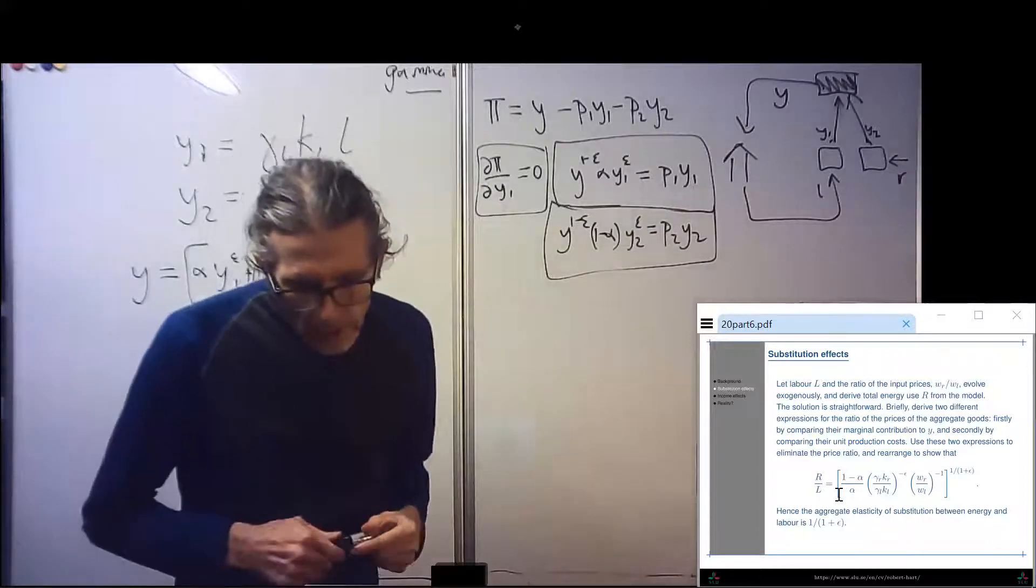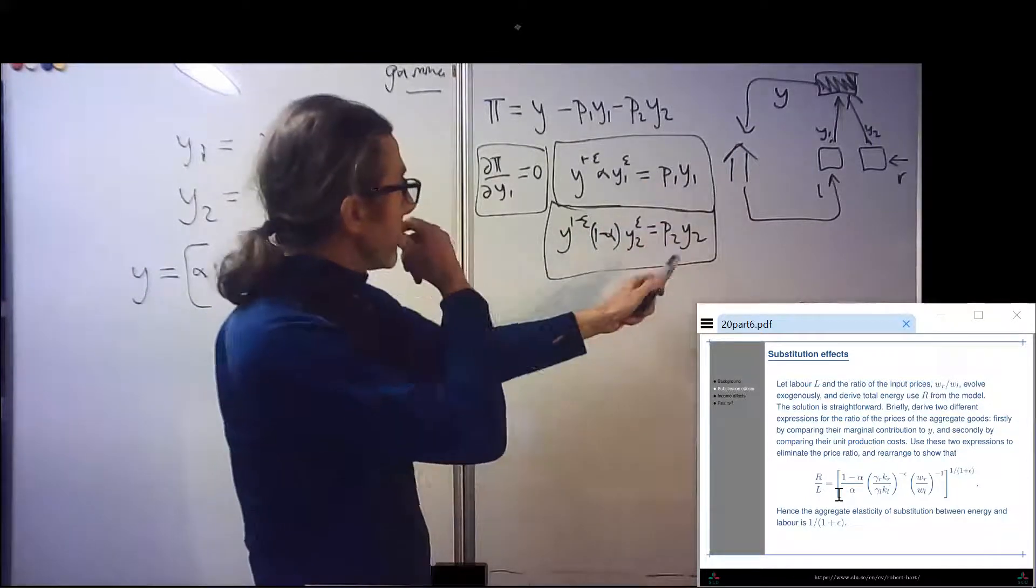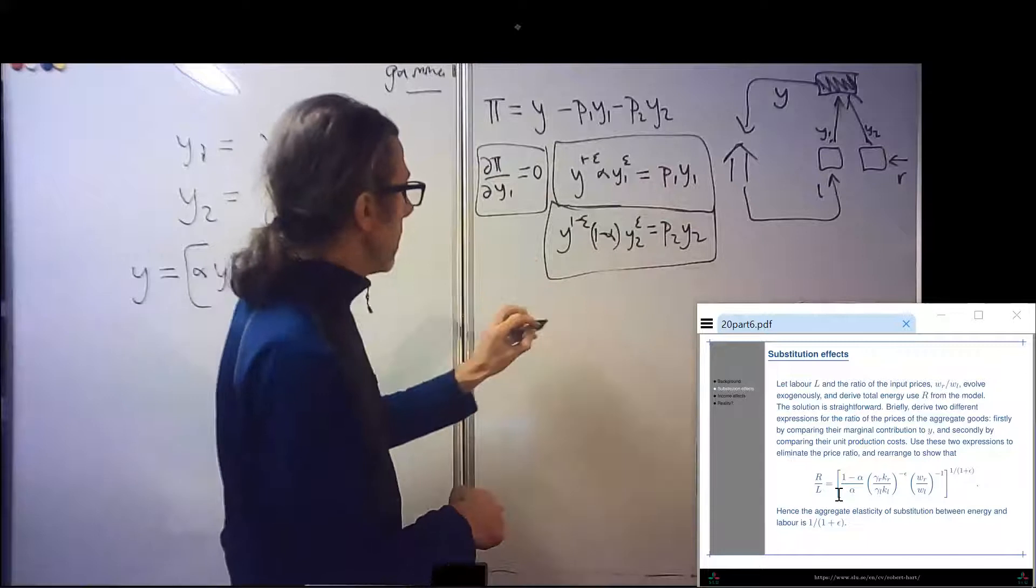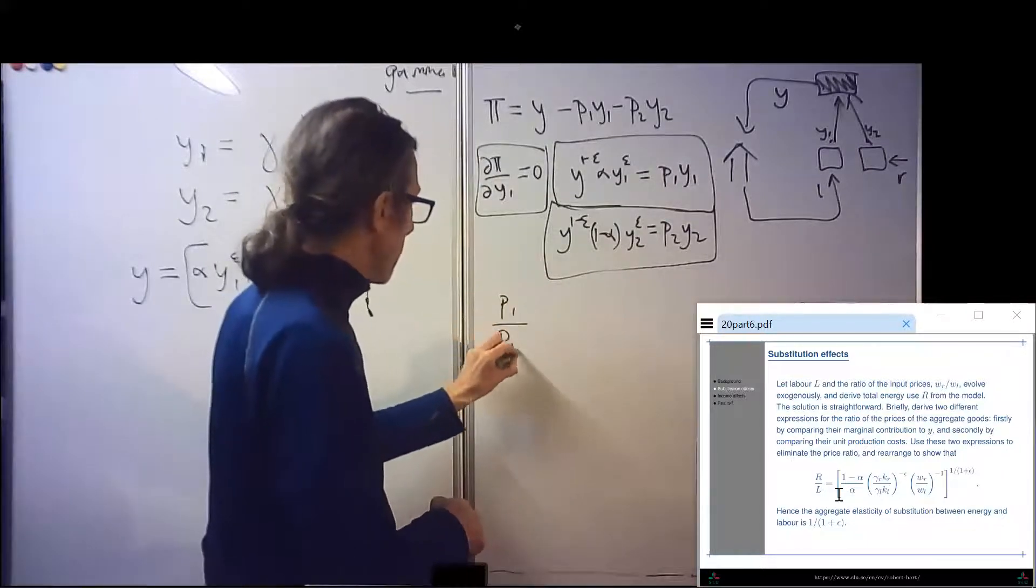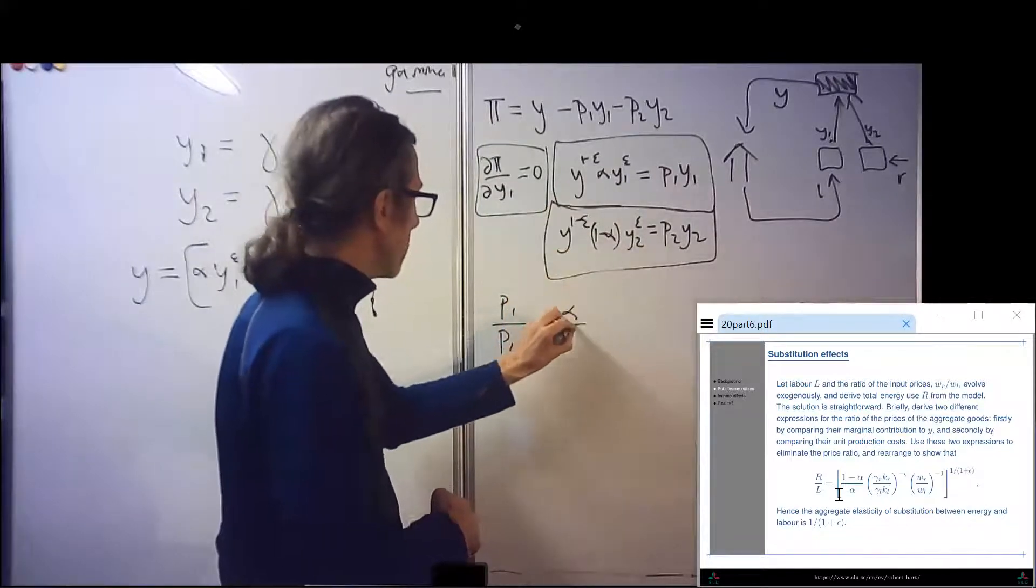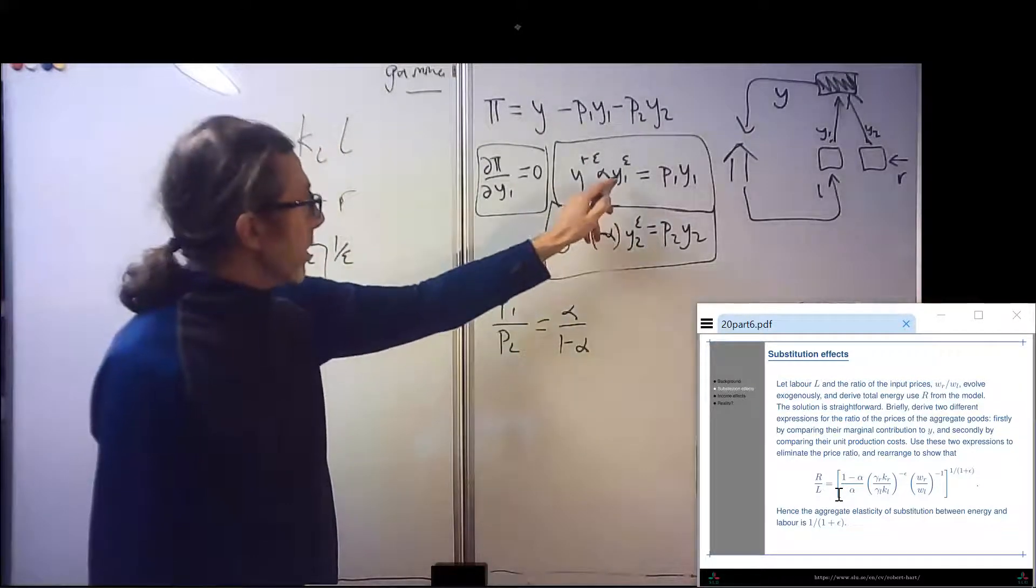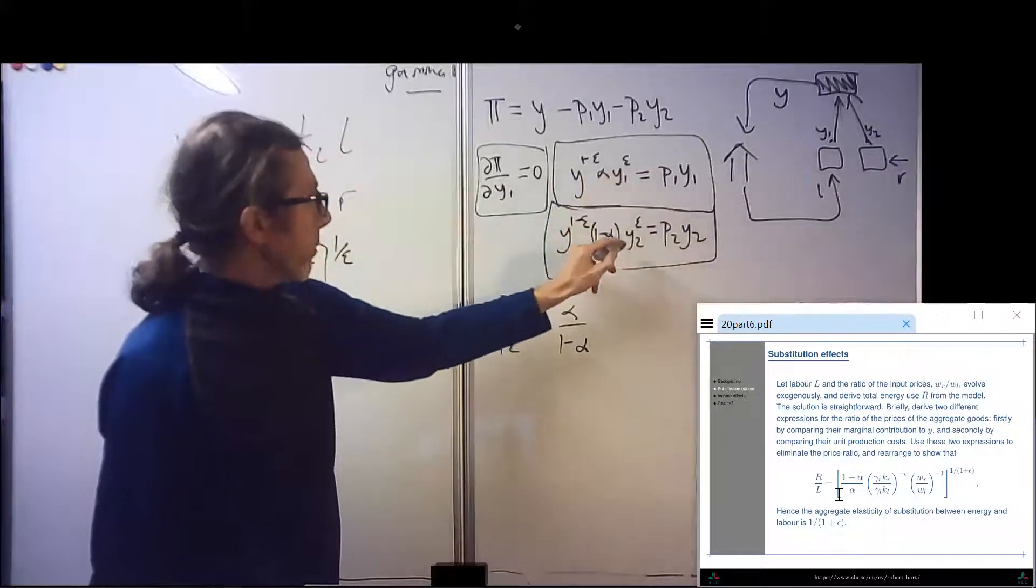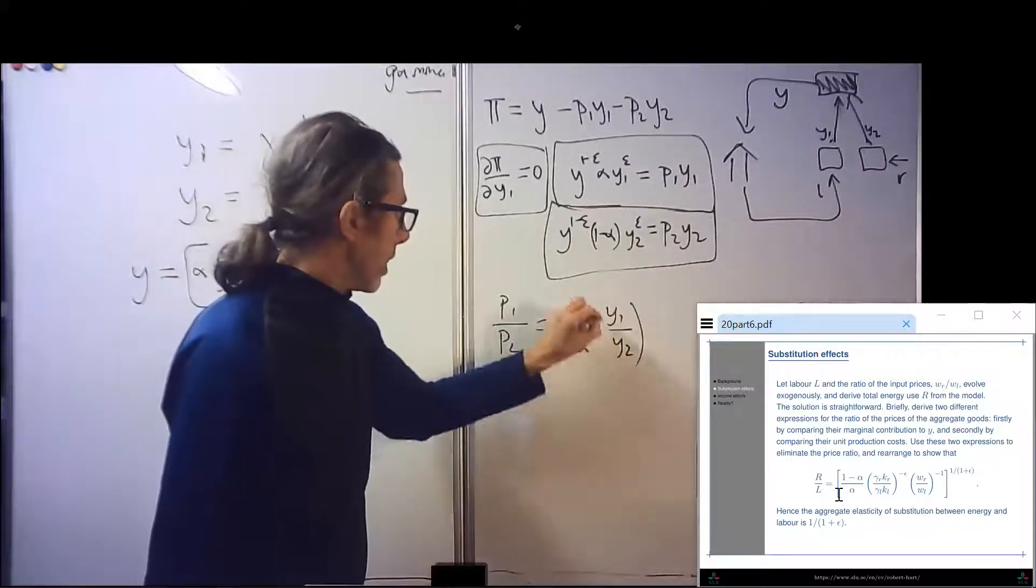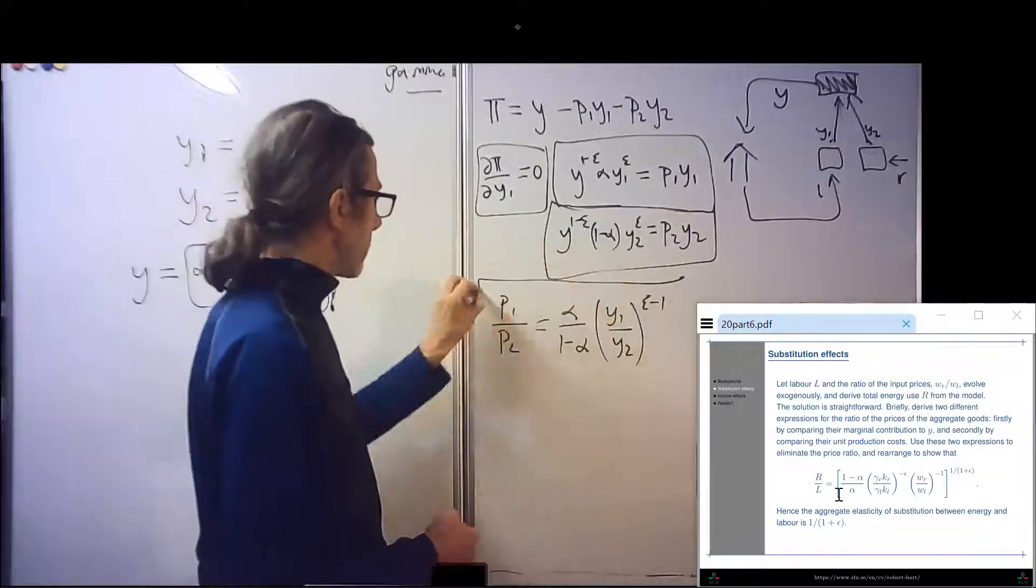And then by symmetry, we can say that Y to the one minus epsilon times one minus alpha times Y2 to the epsilon equals P2 Y2. Briefly, I'm going back to my notes. Derive two different expressions for the ratio of the prices. So we want the ratio of the prices. So putting those two together, we get P1 over P2 equals, the Y's cancel, alpha over one minus alpha times Y1 over Y2 to the epsilon minus one. So that's our first expression.